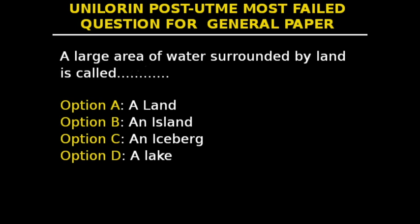Land doesn't contain water. An island is a piece of land that is surrounded by water. An iceberg or ice mountain is a large piece of freshwater ice floating freely in open water. A lake is an area filled with water, localized in a basin surrounded by land, apart from any river or outlet that serves to feed or drain it. So a lake is a large area of water surrounded by land, and our answer is option D.